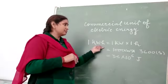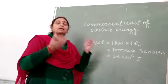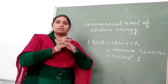So 1 kilowatt hour is equal to, if we want to define 1 kilowatt hour, means 1 unit. So what is the meaning of 1 unit?